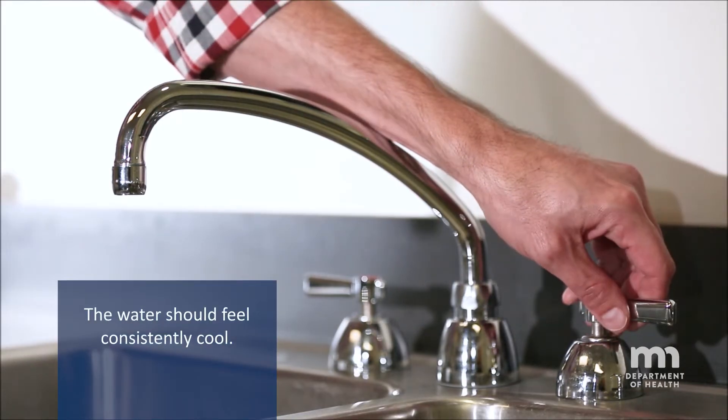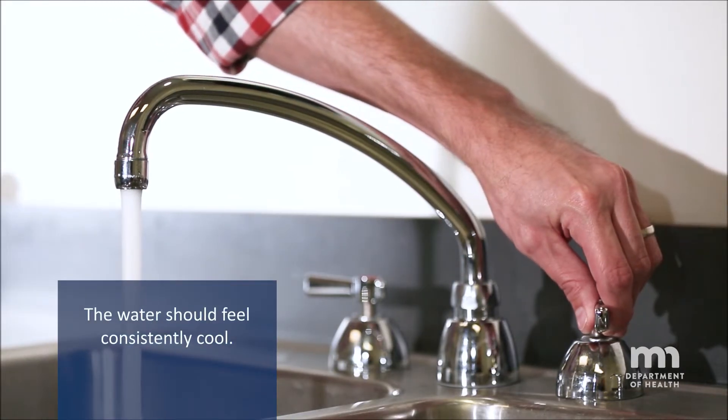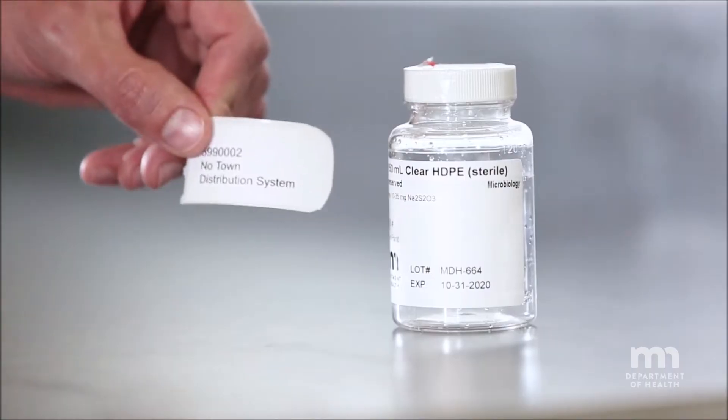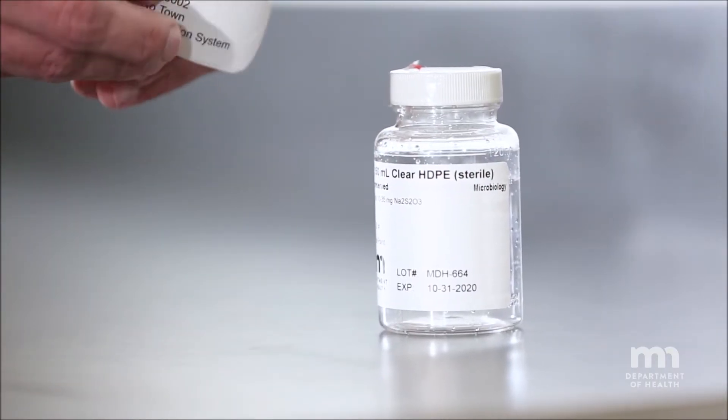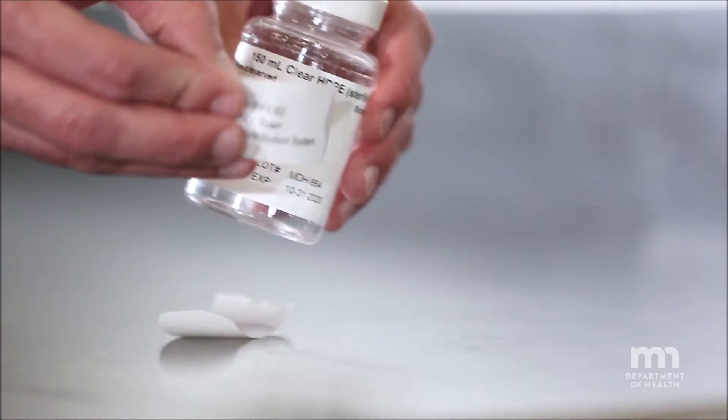Allow water to run in a steady stream for approximately four to five minutes. Place the sticker on the bottle before the sample is collected, while the bottle is still dry.